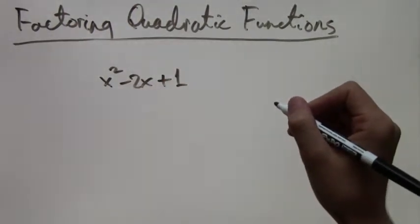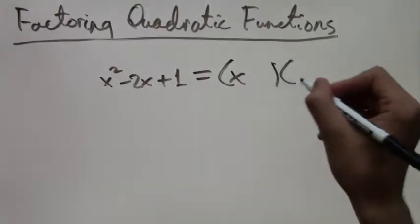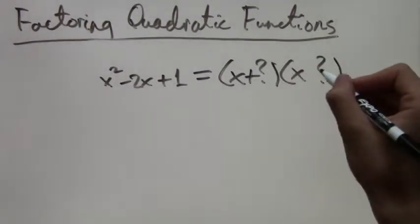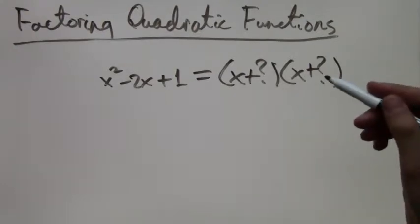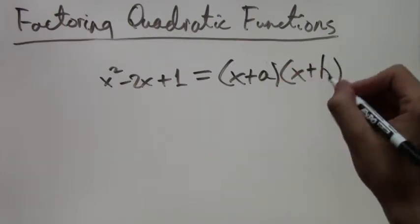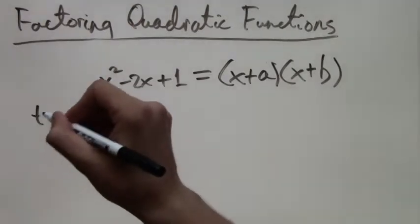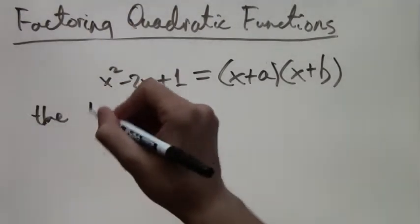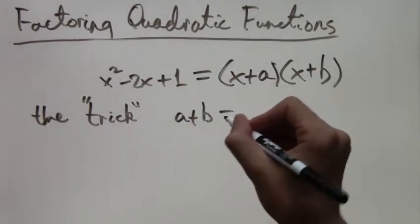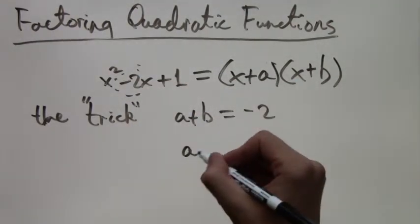So for example, x squared minus 2x plus 1 can be factored, and it's going to be x and something times x and something else. To make our work easier, I'm going to label this as x plus a times x plus b. Now when we're factoring, there's just one rule, one trick. And this trick is that you're just finding out what a and b are.